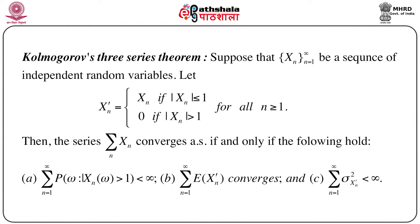The statement of Kolmogorov's three series theorem: suppose x_n, n equals 1 to infinity, is a sequence of independent random variables. Define x_n prime as x_n if the modulus of x_n is less than or equal to 1, and 0 if the modulus of x_n is greater than 1, for every n greater than or equal to 1. Then the series summation x_n converges almost surely if and only if the following three conditions hold: (A) the summation from n equals 1 to infinity of the probability that the modulus of x_n is greater than 1 is less than infinity; (B) the summation of the expectation of x_n prime converges; and (C) the summation of the variance of x_n prime from n equals 1 to infinity is less than infinity.